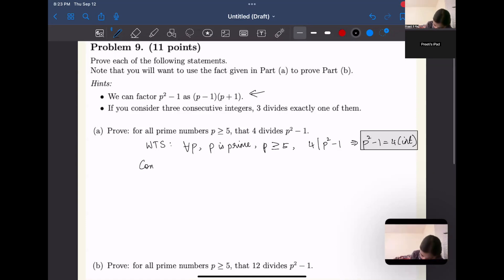Let's consider p squared minus one. I know this can be rewritten as p plus one times p minus one, and this is just coming from this hint over here. We're also given a second hint, which is if I have three consecutive integers, three divides exactly one of them. Being able to divide it from three is not useful because I need to show that it is divisible by four, so we're not going to use that hint just yet.